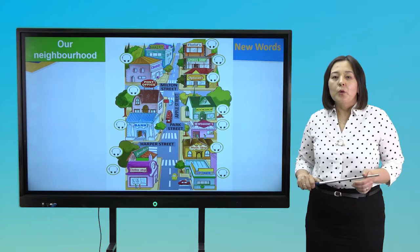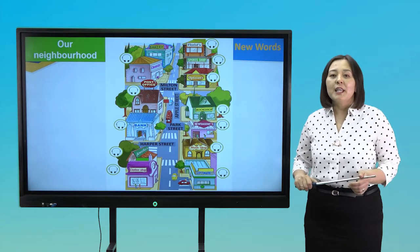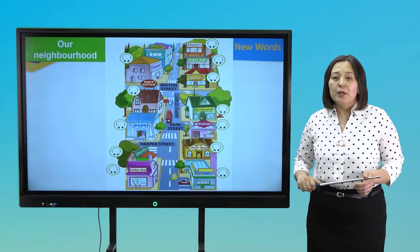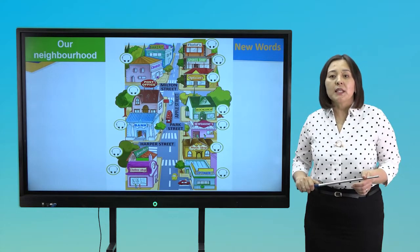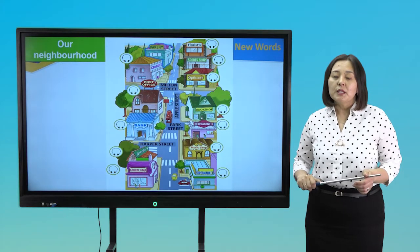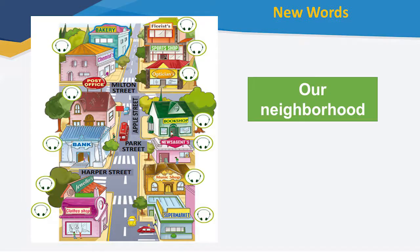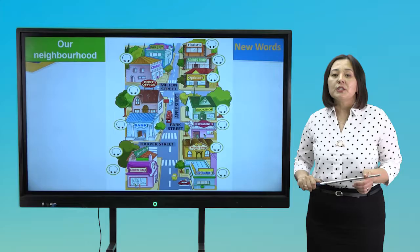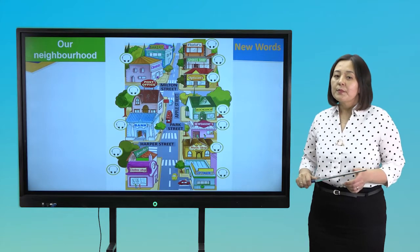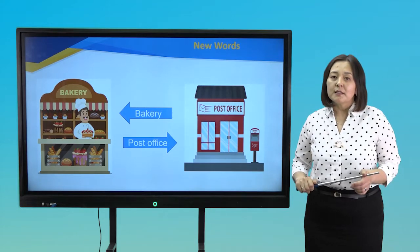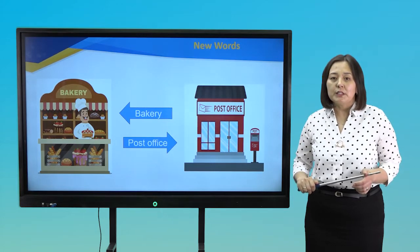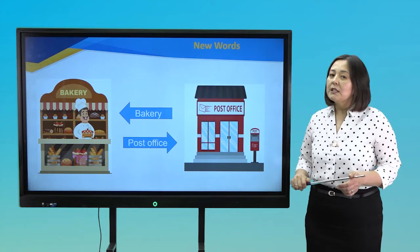Look at the picture. What is it? It's a neighborhood. Neighborhood is an area where people live and interact with one another. Neighborhood is defined as a group of houses or buildings that are together in an area that are grouped together as a unit. So, let's learn new words. Listen, repeat and read. Places in the neighborhood.